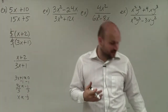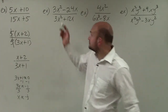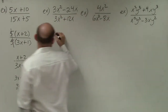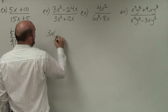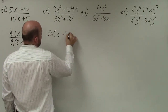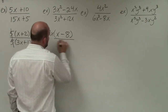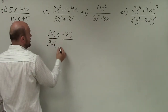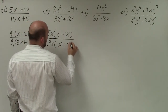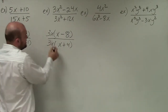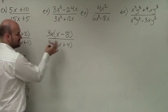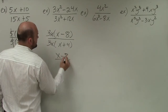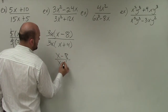Now in the second example, we look at what our common factors are. In the numerator, we can see that the terms share not only a 3 but also an x. So when I factor out a 3x, I am left with x minus 8. In the denominator, they also share a 3x, so I factor out a 3x and I'm left with x plus 4. Similar to the first example, 3x divided by 3x divides out, leaving me with x minus 8 over x plus 4.